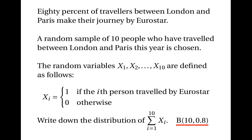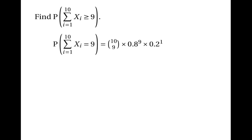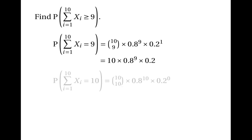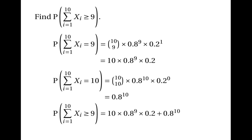10 is the number of trials (people), and 0.8 is the probability of success (travelling by Eurostar). Do remember this, because you see questions like this fairly often. Now we know the sampling distribution, we can ask questions about probabilities. For example, the probability that the sum is greater than or equal to 9. That's the probability it equals 9 plus the probability it equals 10. Using the binomial formula: 10 choose 9 times 0.8⁹ times 0.2, plus 0.8¹⁰, which equals 0.376 to three significant figures.